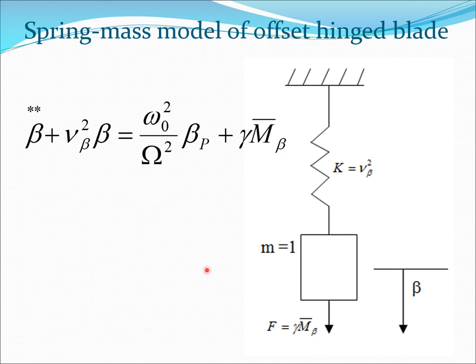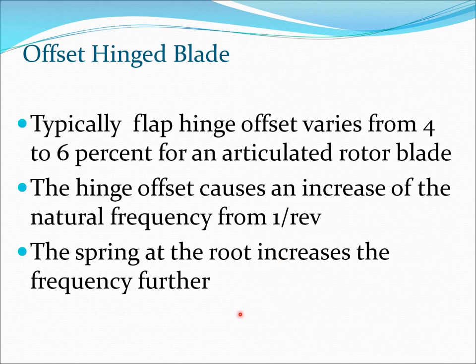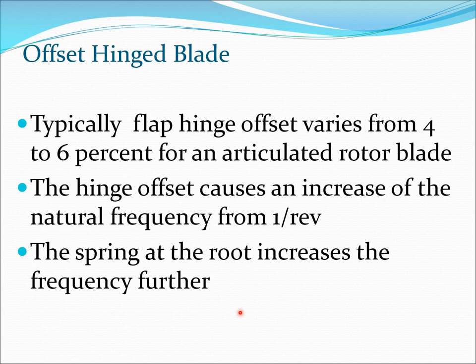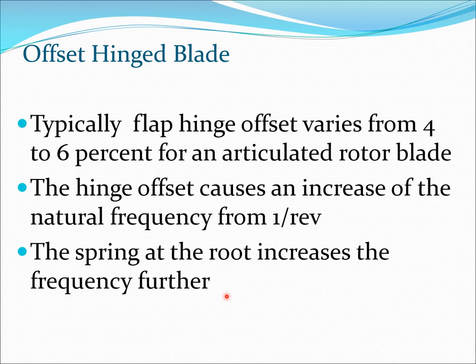Typically the flap hinge offset varies from four to six percent of the blade radius for a typical rotor blade. The hinge offset causes an increase in the natural frequency above one per rev. In our previous lecture, when e was zero the frequency was exactly one per rev. The first increase comes from the 3e/(2R) term due to the flap hinge offset, and the next from the k_beta spring term — both increasing the effective structural stiffness.